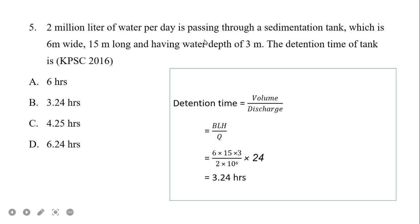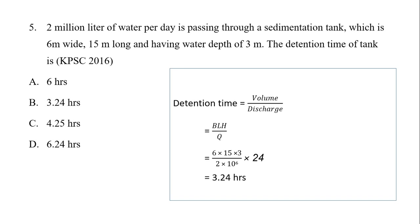Next question: 2 million liters of water per day is passing through a sedimentation tank which is 6 m wide, 50 m long, and has a water depth of 3 m. The detention time of the tank is: Volume = 3 × 50 × 6 divided by discharge of 2 × 10⁶ L/day, converting with 24 hours gives approximately 3.2 hours. The answer is option B.